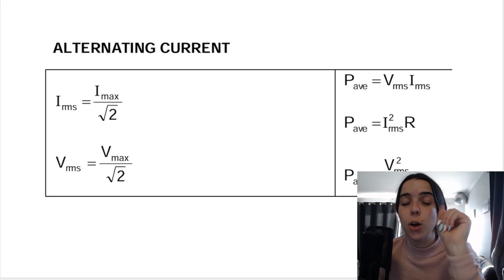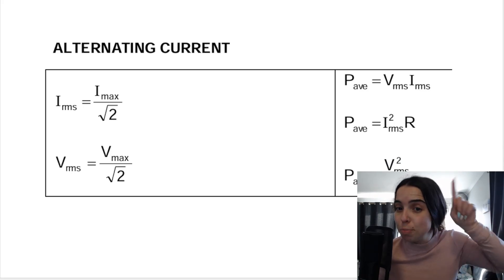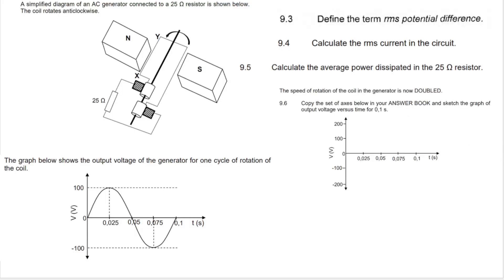In this video we're going to tackle some past paper questions, some exam questions based on this. This is the question that we'll be doing together and it comes from a final paper, November 2021. The first two questions were general questions relating to the generator itself, which is not the focus of this video, so we're going to be doing 9.3 to 9.6 in this video. Let's get to it.